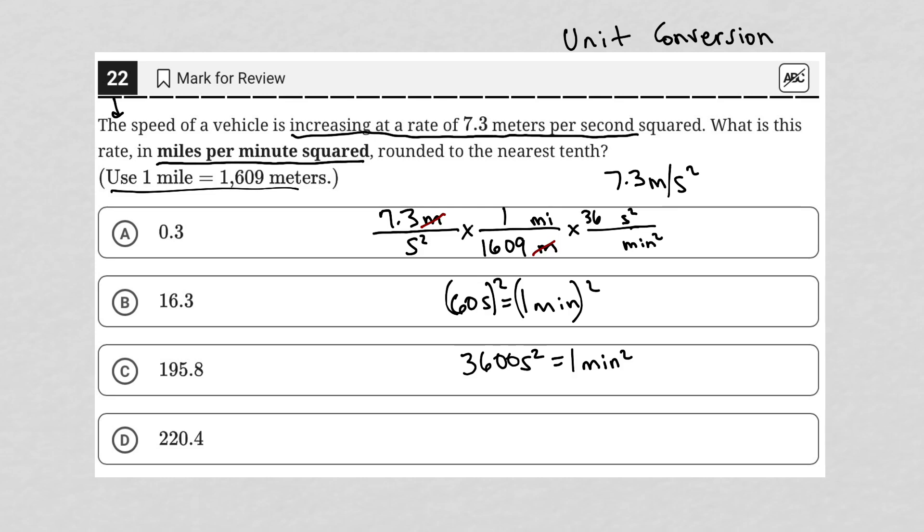So 3,600 is my number in the numerator. One is in the denominator. My seconds squared canceled between here and here. And now I have all the units that I want. I have my miles per minute squared.